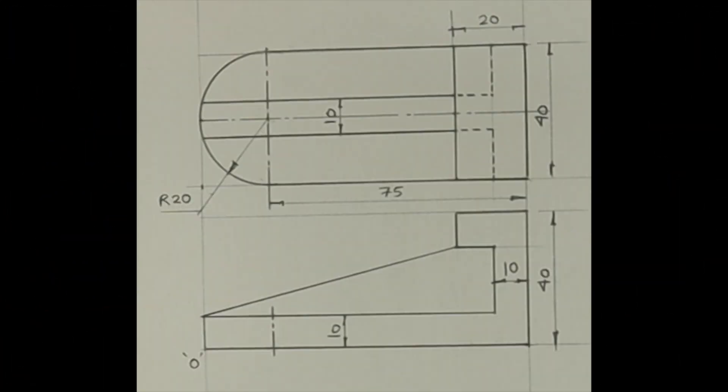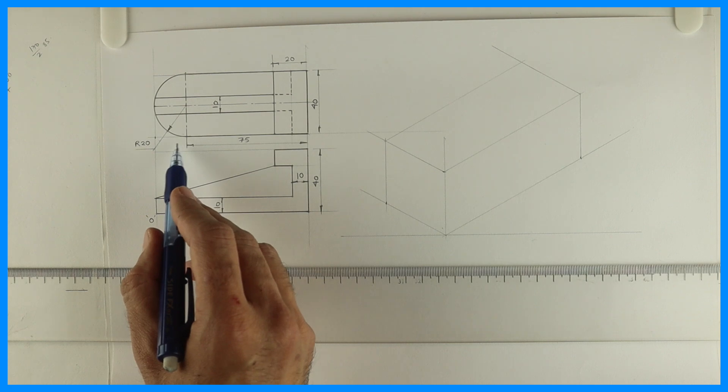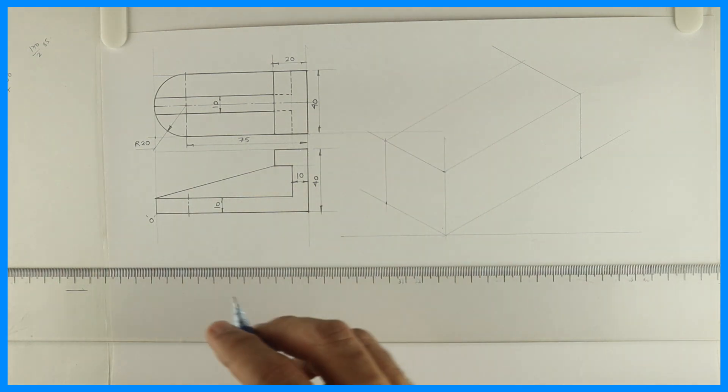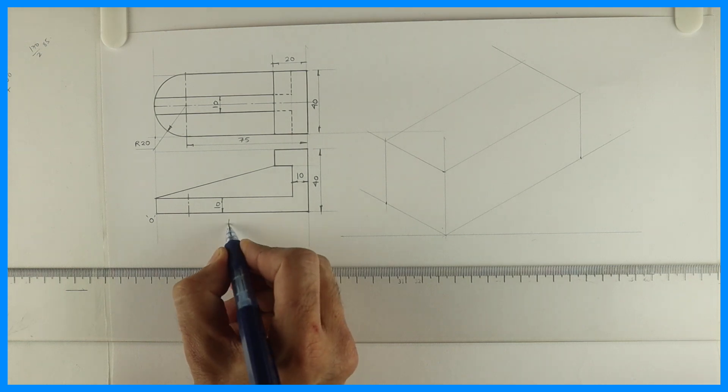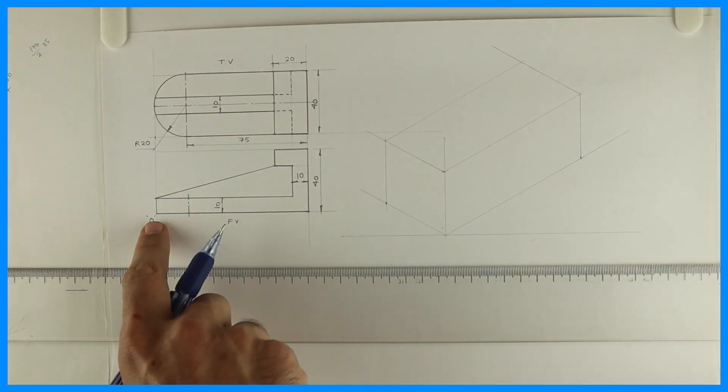Welcome to technical drawing. Today we are going to solve the sum in isometric. If you see, the length is 75 plus 20 equals 95, which is on the right side. Height is 40. This is the front view and this is the top view. It's in third angle - front view is down, top view is up.